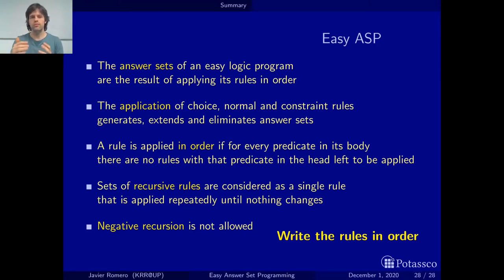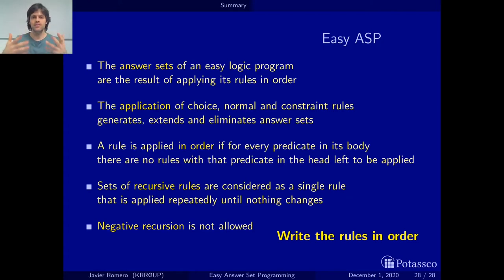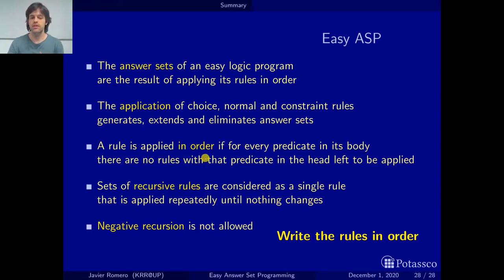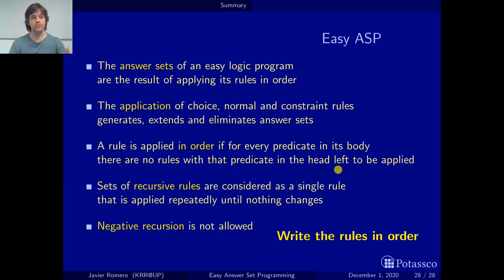With normal rules we must add new atoms to our sets, and with constraint rules, whenever the body holds, it eliminates the answer set. We also talked about what it means to apply a rule in order: a rule is applied in order if for every predicate in its body there are no rules without that predicate in the head left to be applied, and we have seen this going through the examples.